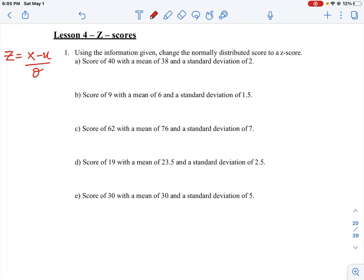So it says here for a score of 40, with a mean of 38 and a standard deviation of 2. Okay, so we'll just fill in our values here. So the score is the data point, that's X, which is 40.